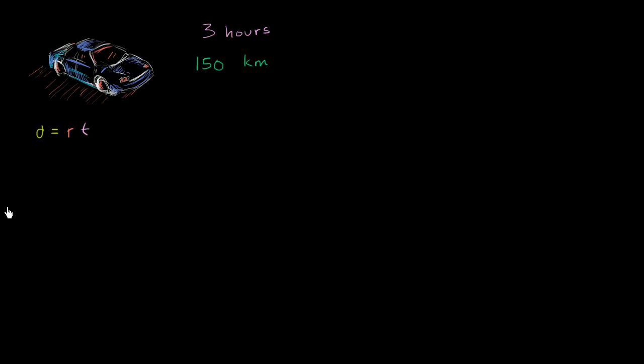Let's remind ourselves what rate even is. You could think about distance as being equal to rate times time. Or, if you divide both sides by time, distance divided by time is equal to rate. They've given us a distance and a time, so we can just divide the distance by the time to figure out the rate.